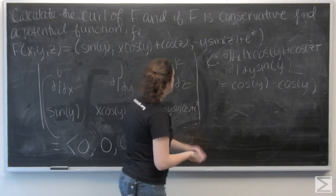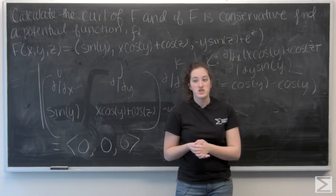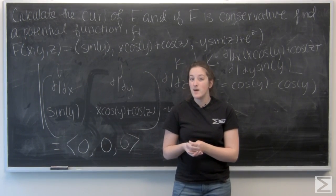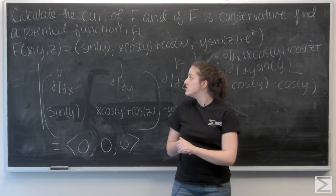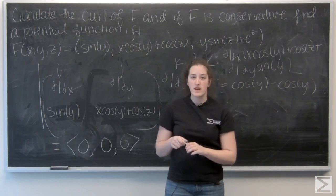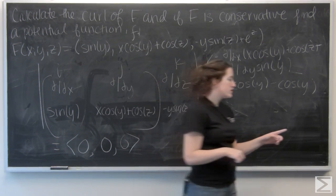So the curl of my vector field is zero, and that means that it is conservative. So now I need to work on finding a potential function.